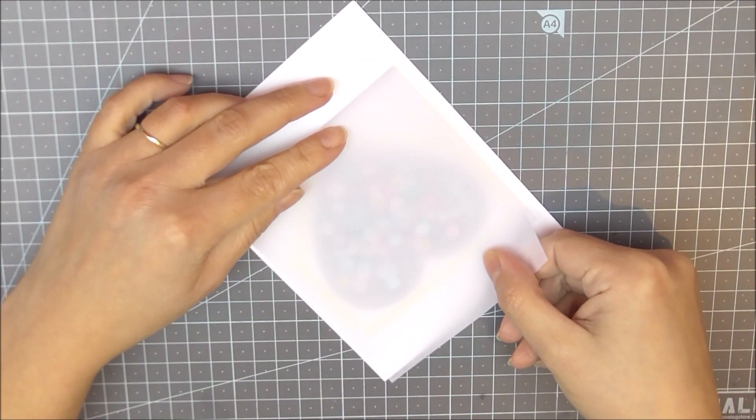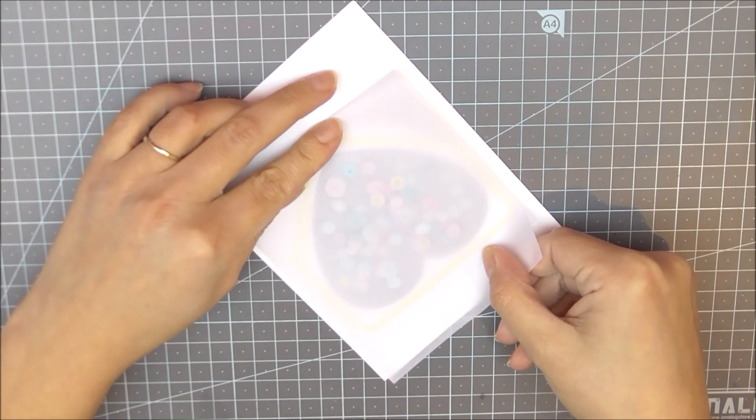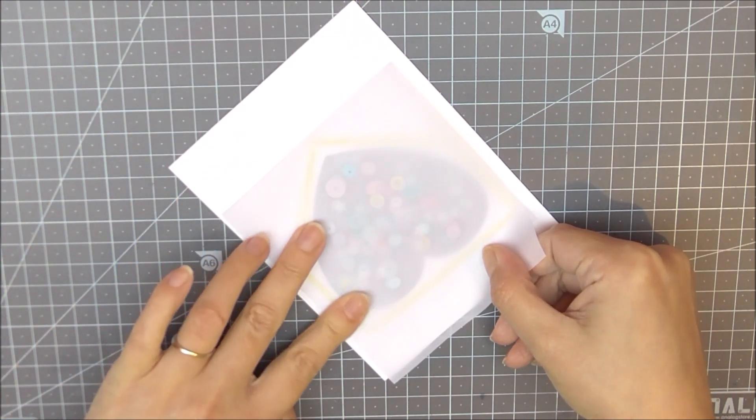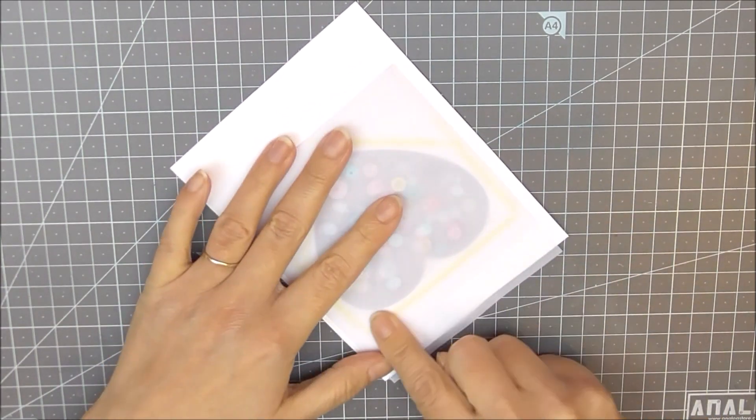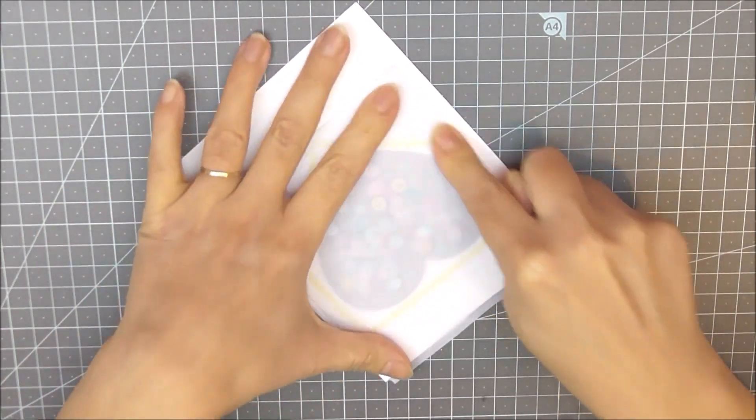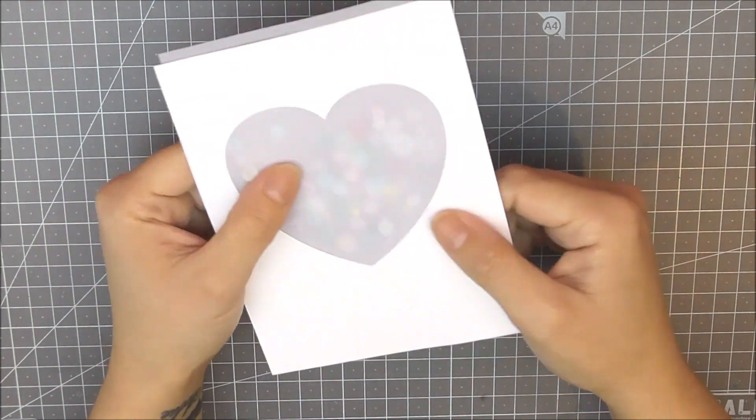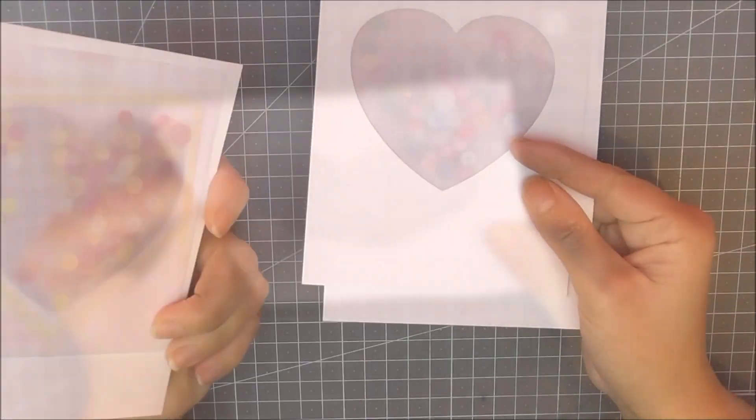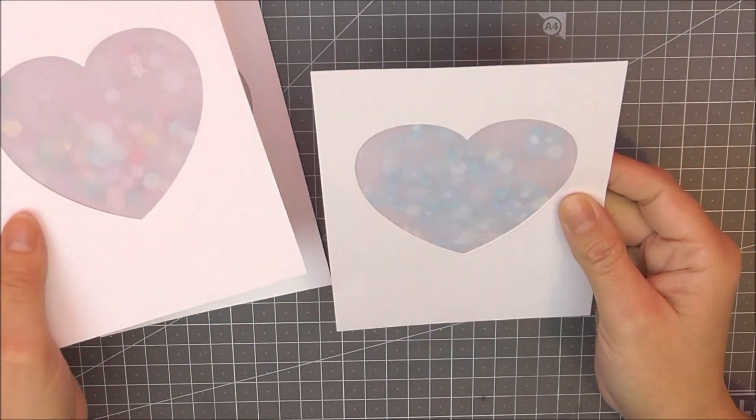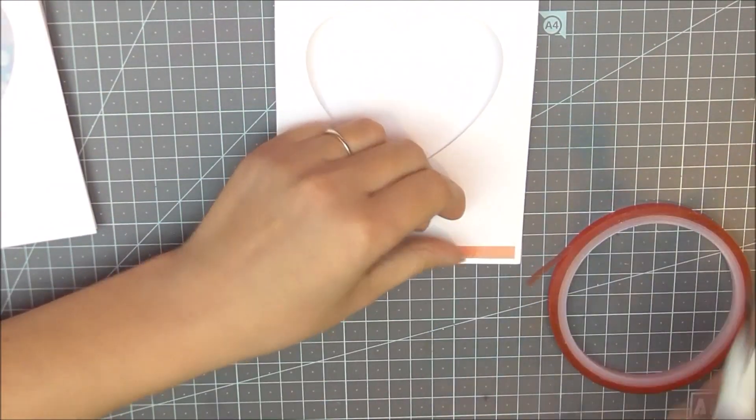I'm then going to fold over that piece of vellum and for any that's hanging over the top, I'm just going to trim that off. You're really going to want to press this glue tape down so it seals all of those sequins into your little shaker element there, and just how pretty does that look. As you can see, I've done my three panels exactly the same - a blue one, a pink one, and a multi-colored one.